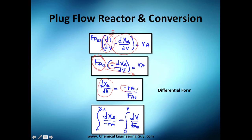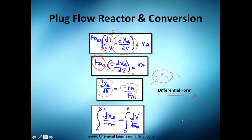It's important to use the rate of reaction, not the rate of production — be sure to include the negative sign. Without it, you have a rate of production, not a rate of reaction. This is the differential form of the PFR design equation.